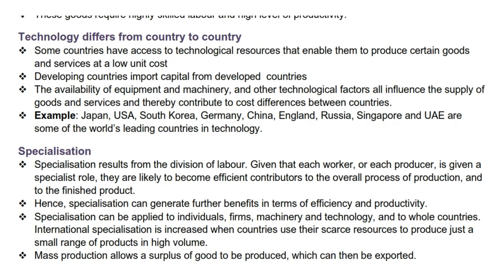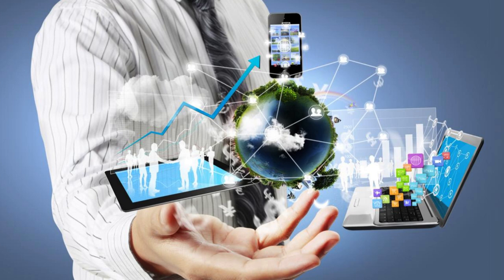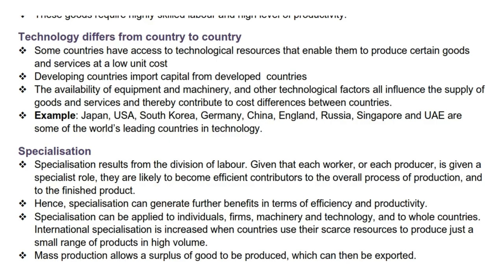The next supply reason is that technology differs from country to country. Some countries have access to technological resources that enable them to produce certain goods and services at a low unit cost. Developing countries import capital from developed countries. The availability of equipment, machinery, and other technological factors influences the supply of goods and services, contributing to cost differences between countries. Japan, USA, South Korea, Germany, China, England, Russia, Singapore, and UAE are some of the world's leading countries in technology.